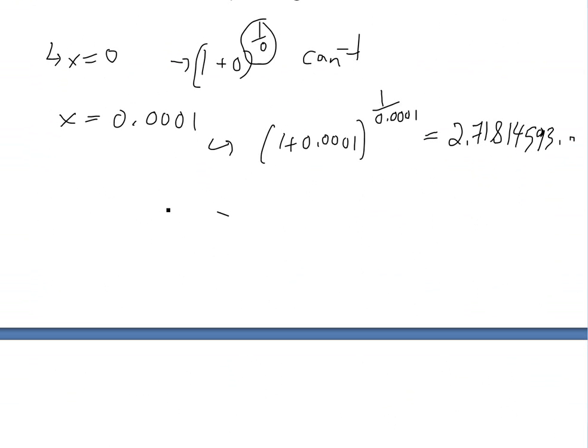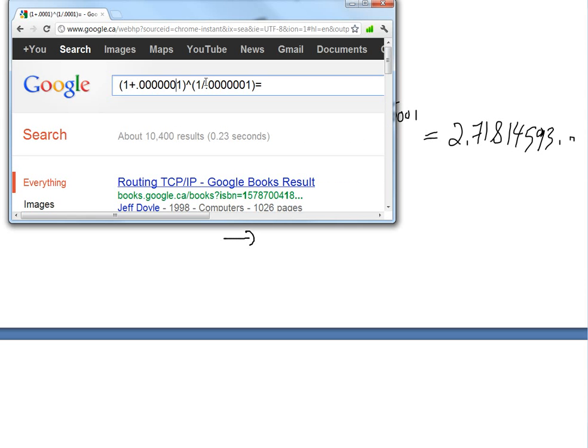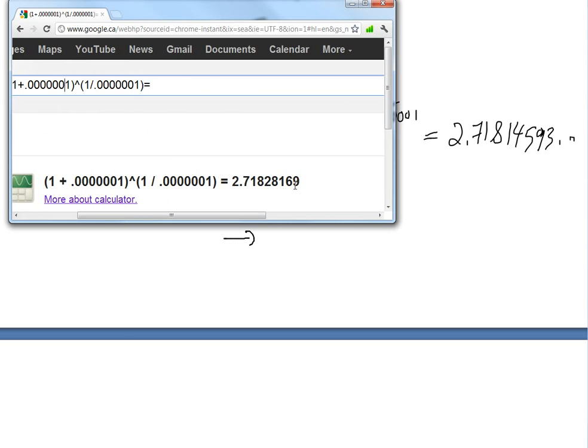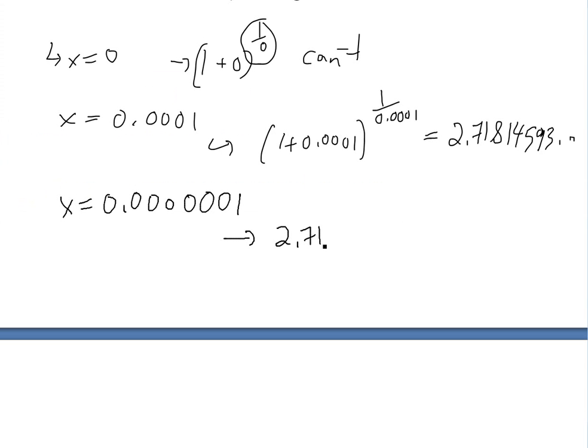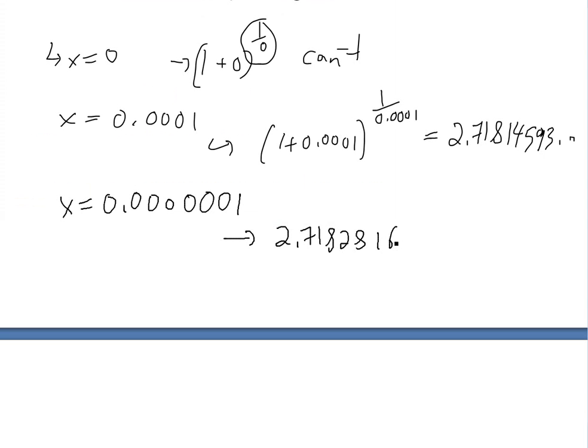So it basically gets closer and closer. We'll try x equals 0.000001, let's get 6 zeros, and then if we put in this calculator again, let's add three more zeros. And then this, so it's getting closer and closer. The other one was 183. This is 2.718281690.